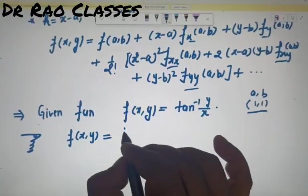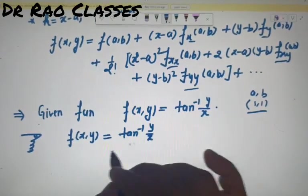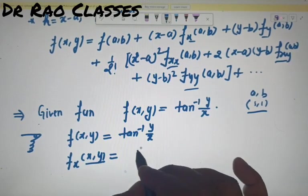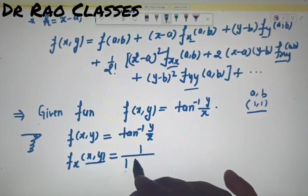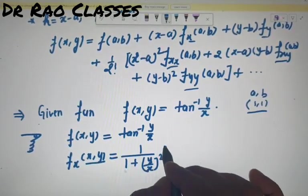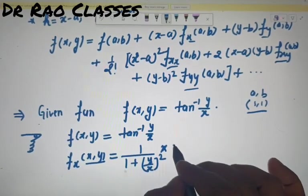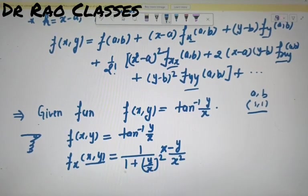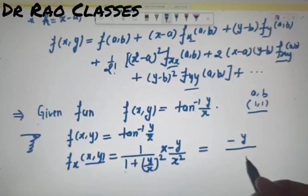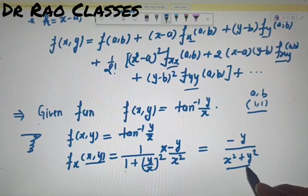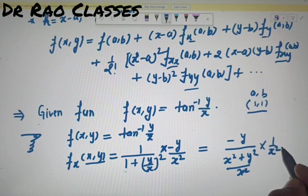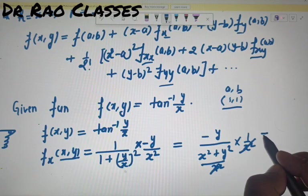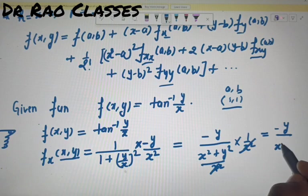f(x,y) = tan⁻¹(y/x) है। f_x निकालना है: x के respect में करने पर 1/(1 + (y/x)²) times (y/x का x के respect में derivative), जो है -y/x². Simplify करने पर: x² + y² नीचे common लेने से f_x = -y/(x² + y²)।